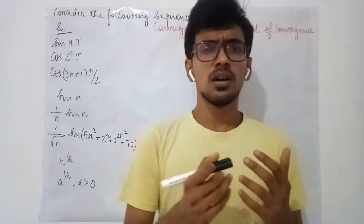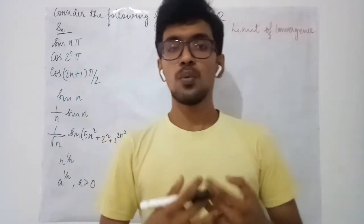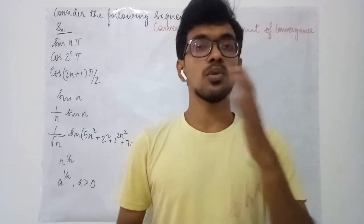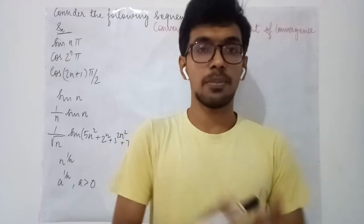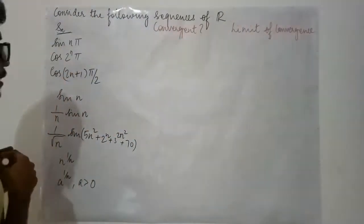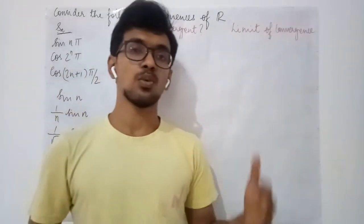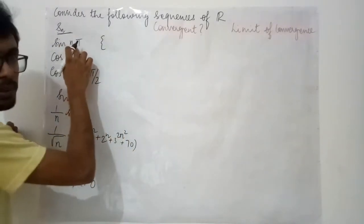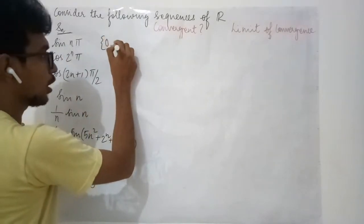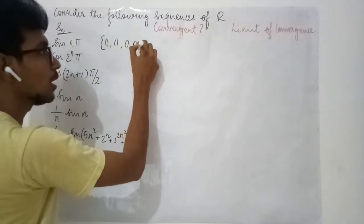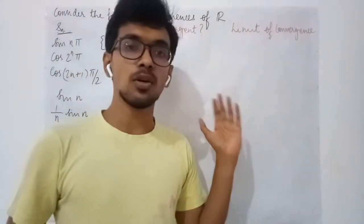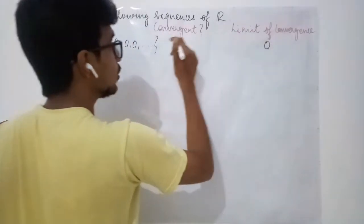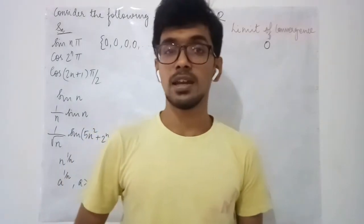Whenever we try to find the limit of a sequence, we let n approach infinity and see what happens. Another way is to write down the elements of the sequence and see what is happening. Here n takes values in the set of natural numbers: 1, 2, 3, 4, and so on. When we substitute, sin(1π) = 0, sin(2π) = 0, sin(3π) = 0, sin(4π) = 0 — all entries are zero. Therefore the limit of this sequence is 0, which is a unique finite value, so the sequence is convergent.